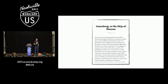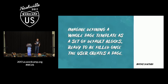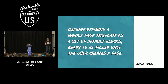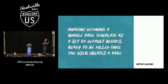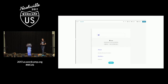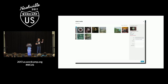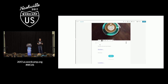Matthias, one of the people working on this project, wrote a post called 'Gutenberg and the Ship of Theseus' where he said, 'Imagine defining a whole page template as a set of default blocks, ready to be filled once the user creates a page.' This is important because anyone who's built a site knows you hand it over to the client and they do something totally different. But if you can provide an actual rigid template — 'you fill in this template and it will look exactly the way we want it to' — you can. You can feed a template of blocks to WordPress and say, here is the template, you just fill in the blocks as I've set them up.